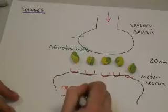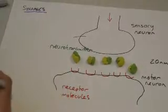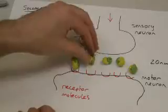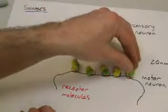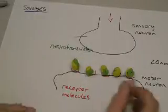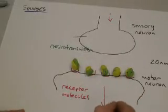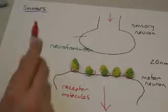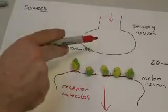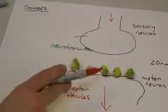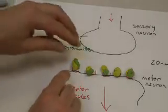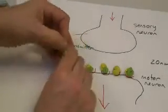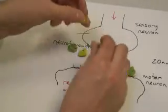are receptor molecules, and these have a particular or specific shape to the neurotransmitter. The neurotransmitter fits into these receptor sites and that will then cause another nerve impulse to be passed along the motor neuron. So our impulse travels down, neurotransmitter diffuses across the gap, and then continues in the next neuron.